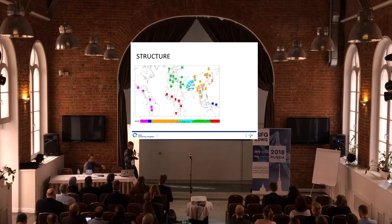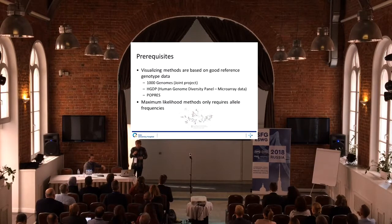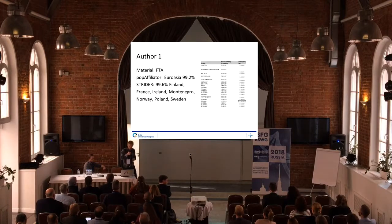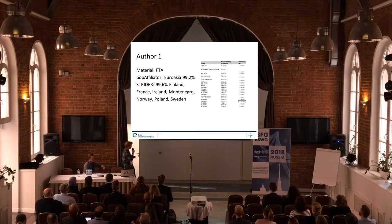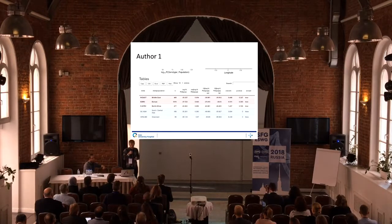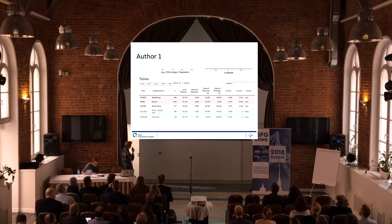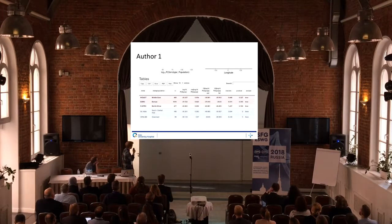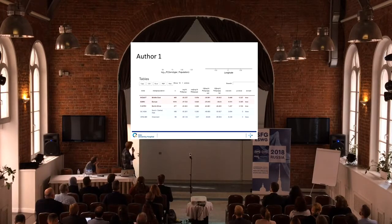Let's start quickly with the first filter. We picked out the ancestry-informative markers — I think there are about 65 ancestry-informative markers. We can see that the first author fits pretty closely in Europe or the Middle East, with a likelihood ratio of about 100 in favor of Europe, mostly indicating that Europe is the most likely origin.